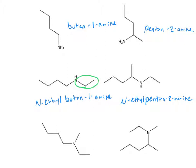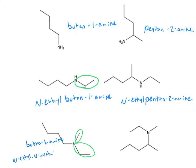In our last two examples, we have tertiary amines, which now have three carbon groups coming off our nitrogen. We're going to identify our longest group — four carbons attached to our amine from the first carbon. So once again, in this one, we have butan-1-amine. But now we're going to identify two substituents: we have a methyl and an ethyl substituent. And so therefore, we have N-ethyl-N-methyl for a final name of N-ethyl-N-methyl-butan-1-amine.